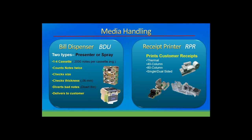Receipt printers print receipts for the customer. 99.9% of them today are thermal — they work on thermal paper, which means no ink cartridges needed. Most are 40 columns, some are 80 columns. Most thermal printers are single-sided today, though there are some dual-sided thermal receipt printers on the market — NCR, in fact, has one.